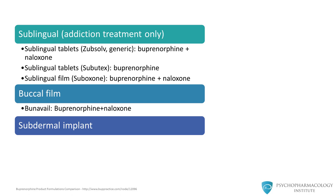Buprenorphine comes in various formulations and is available as a sublingual formulation in both tablets and films. This formulation is used exclusively for addiction treatment in the United States. The sublingual formulation comes in two different versions: either as a combination tablet of buprenorphine and naloxone, or simply just buprenorphine. In addition, there are buccal film formulations, and now there is also a buprenorphine implant available. The most widely used formulations for addiction treatment are the sublingual formulations, both tablets and films.